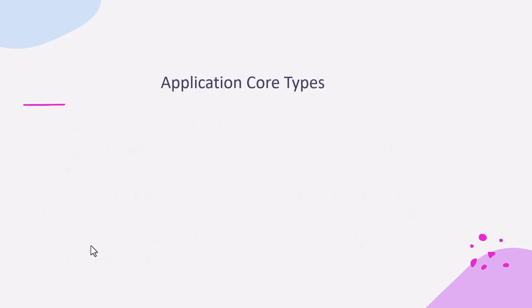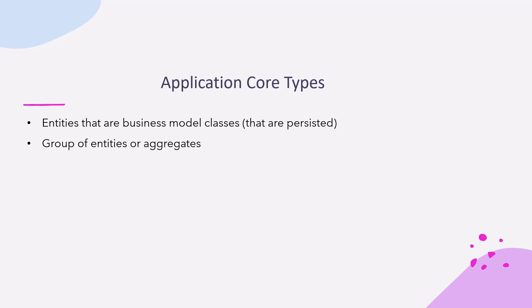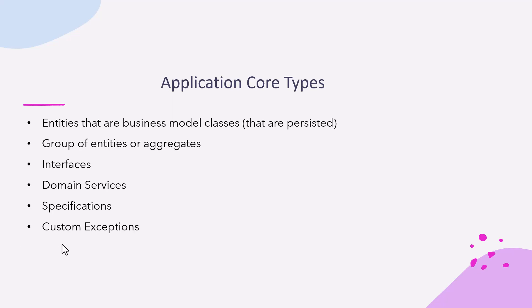Next come the application core types: entities that are business model classes and data which are persisted, group of entities or aggregates, interfaces, domain services, specifications, custom exceptions, and domain events and handlers.